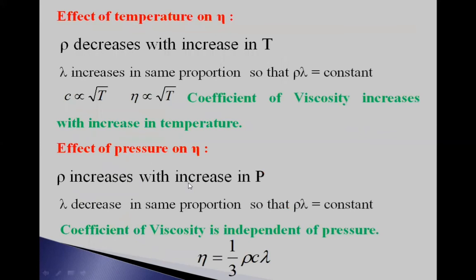We now consider the effect of temperature and pressure on η. With increasing temperature, density ρ decreases and mean free path λ increases in the same proportion, so the ρλ product remains constant. Since C is proportional to √T, η is directly proportional to √T — so the coefficient of viscosity increases with temperature. Regarding pressure: density increases with pressure while λ decreases proportionally, keeping ρλ constant. Therefore, η = (1/3)ρCλ is independent of pressure.